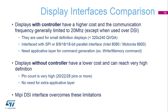In terms of comparison, displays with controller have a higher cost and frequency generally limited to 20 MHz. They are used for small definition displays interfaced with SPI or FSMC, and they need an applicative layer for command generation. Displays without controller have a lower cost and can reach very high definition, but the pin count is very high — 20, 22, or 28 pins or more — and they don't need an extra applicative layer. The MIPI DSI interface overcomes these limitations.